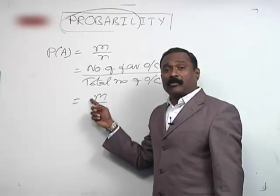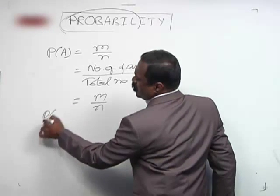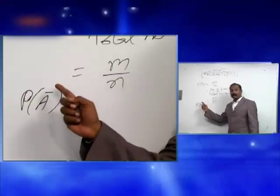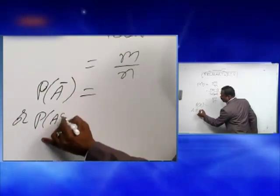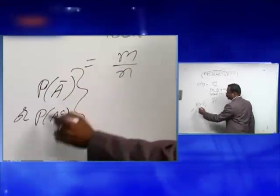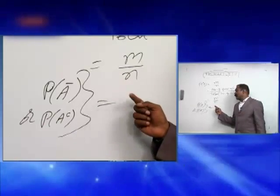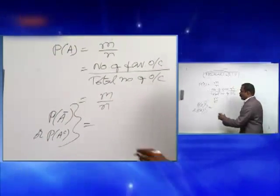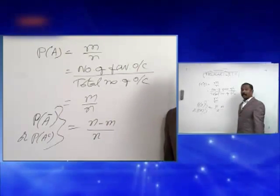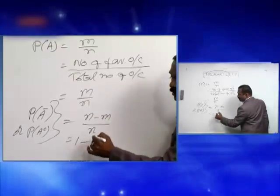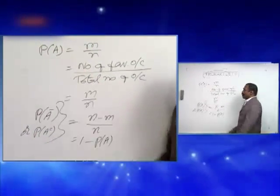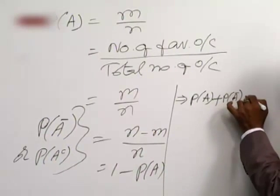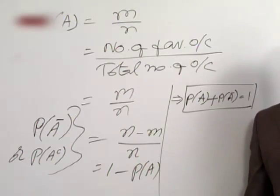For an event A to occur, there are M favourable outcomes and the total outcomes are N. Then the probability of the event not occurring — P of A bar, also written as P of A complement — is the non-favourable outcomes: N minus M upon N. Splitting it gives N/N minus M/N, which is 1 minus P of A. Therefore, P of A plus P of A bar equals 1.